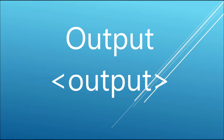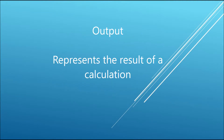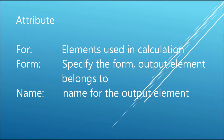The next element is output. As the name suggests, it will give the output of an expression. Output uses three attributes: for, form, and name. In 'for', you write the operands — like a plus b, where a and b are the operands. The 'form' attribute specifies the form to which the output element belongs, and 'name' is the name for the output element.